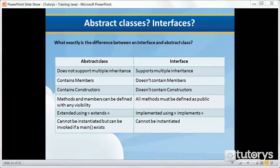In this tutorial video we're going to be looking at the difference between an abstract class and an interface. In the previous couple of videos we've talked about abstract classes and interfaces, so if you are not familiar with what they are, I suggest you go back and look at those videos. But assuming that you do know what they are, you've probably noticed that both of them seem pretty similar, and asked yourself: what exactly is the difference between an interface and an abstract class?